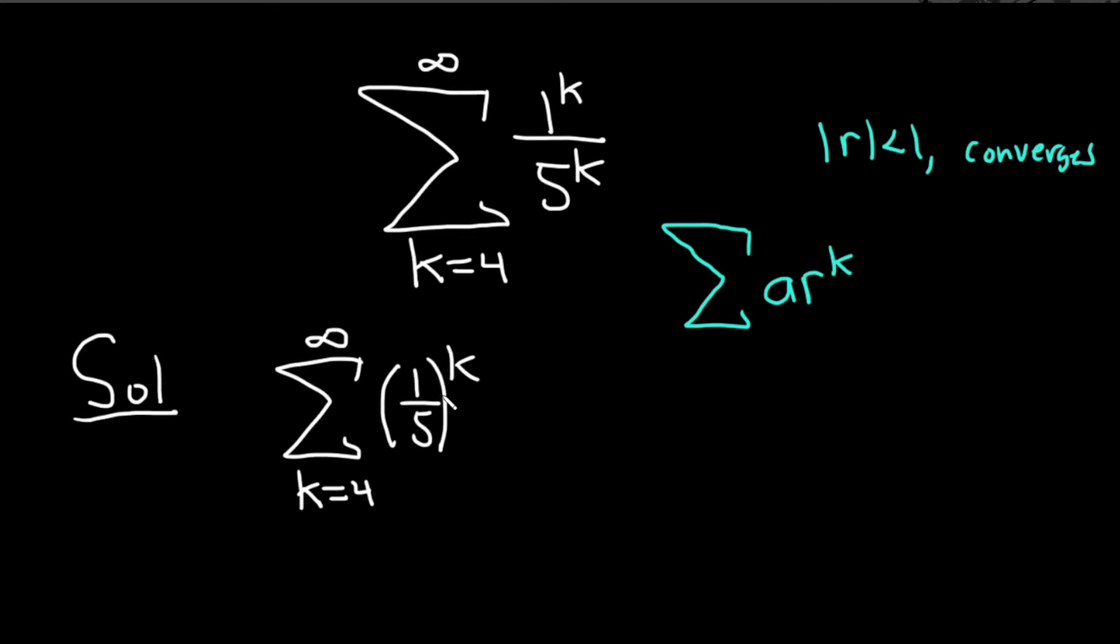Whenever you have a convergent geometric series, to find the sum, you take this number here and plug it into your variable. That goes on top. So it's (1/5) to the 4th. And then on the bottom, you divide by 1 minus r. Our r in this case is 1/5, so it's 1 minus 1/5.